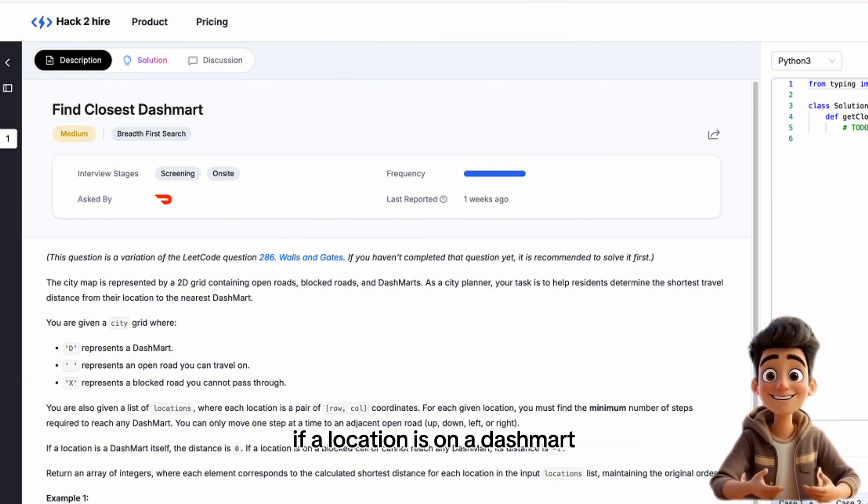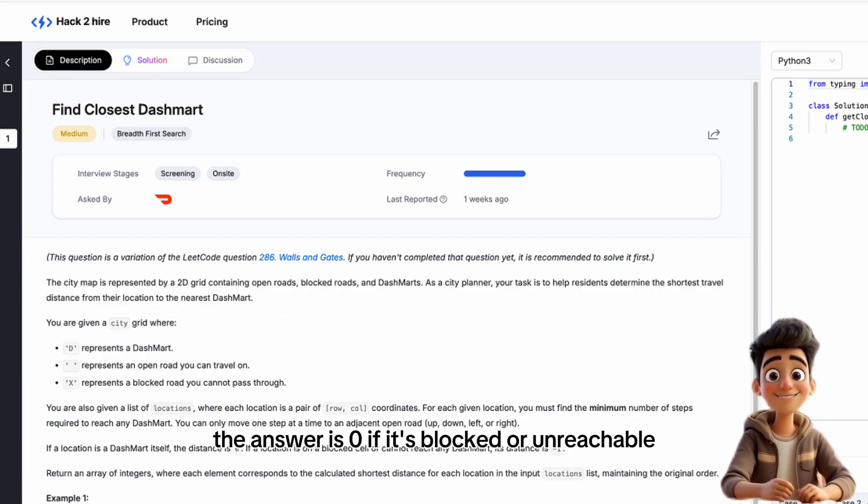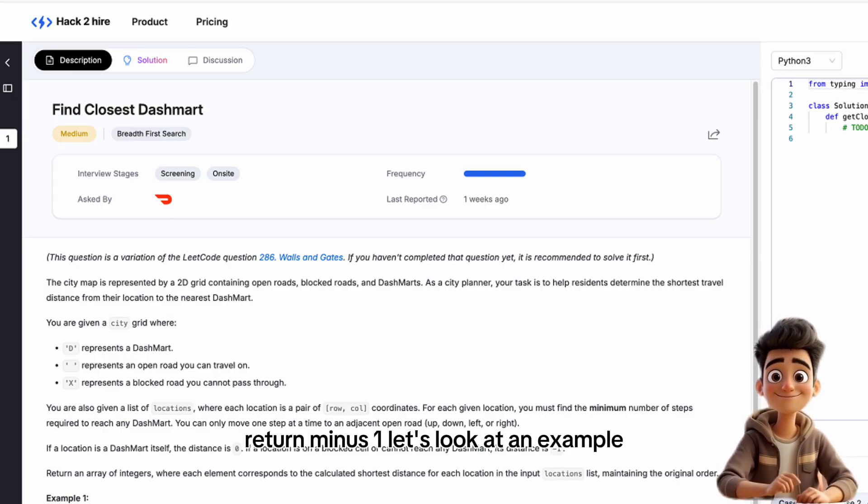If a location is on a dashmart, the answer is 0. If it's blocked or unreachable, return -1.